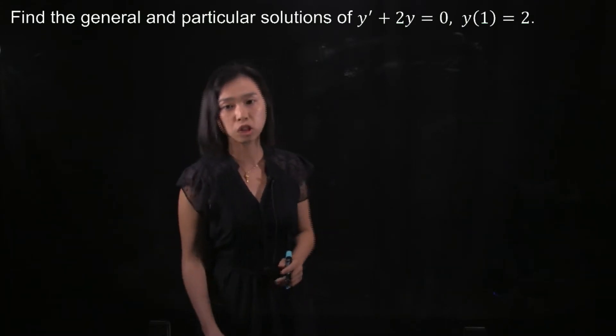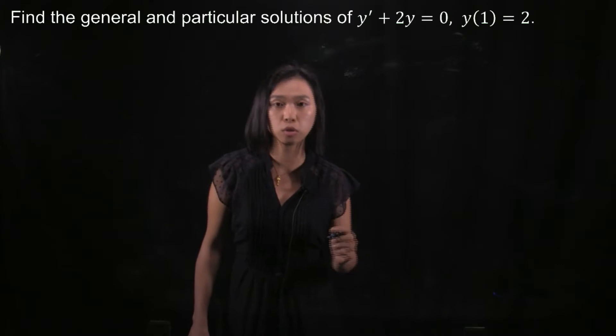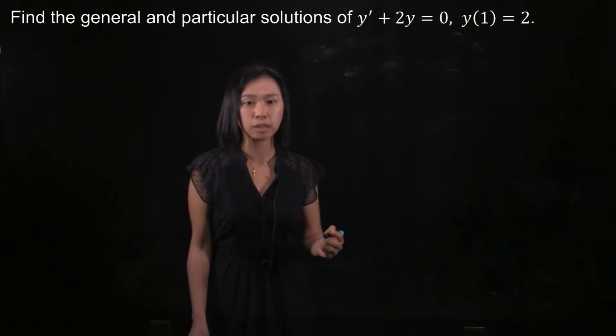In this question, we will find the general and particular solutions of y' + 2y = 0 with x = 1 and y = 2.